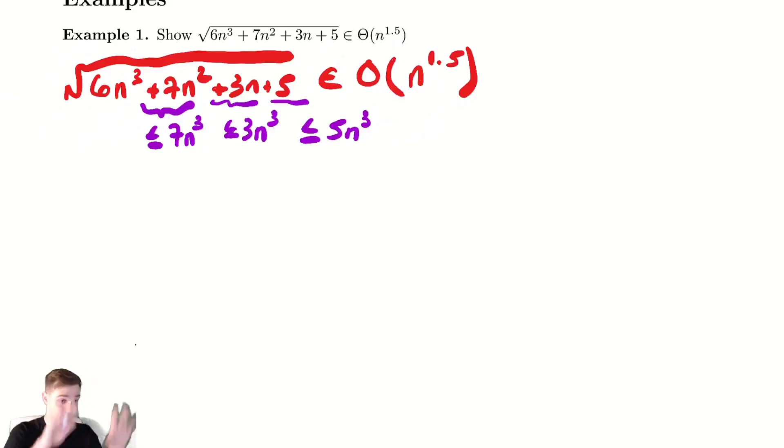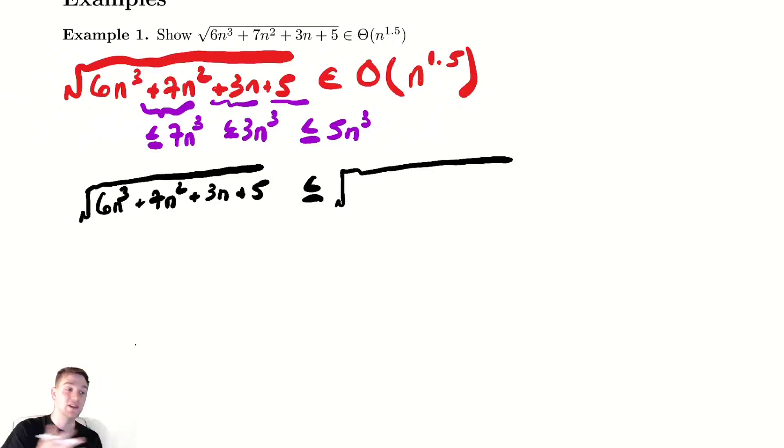Some of those things might not always be true. We'll need to address that in a second, but we will come back to that once we figure out some details. So let's apply that. That original function, let's write that a little neater: √(6n³ + 7n² + 3n + 5) is less than or equal to, radical, replace all of the things with what I claimed above written in purple. We have 6n³ + 7n³ + 3n³ + 5n³.